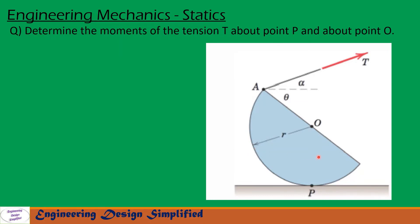In this problem, given is a semi-circular section as shown in the figure whose radius is r. It is arranged such that the angle from horizontal to line OA is theta, and there is a tension T pulling at point A as shown, where the angle between horizontal and this tension is alpha. We need to find: first, the moment due to T about O, and second, the moment due to T about point P.